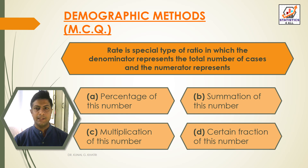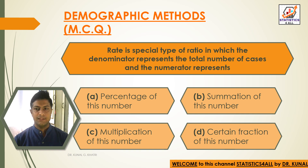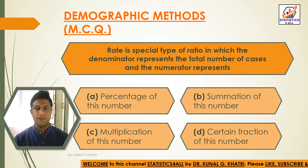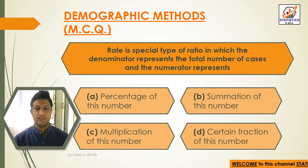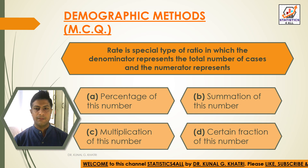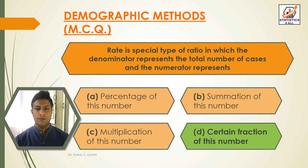Next question: rate is a special type of ratio in which the denominator represents the total number of cases and the numerator represents — Option A: percentage of this number, Option B: summation of this number, Option C: multiplication of this number, Option D: certain fraction of this number. The answer is Option D — certain fraction of this number.